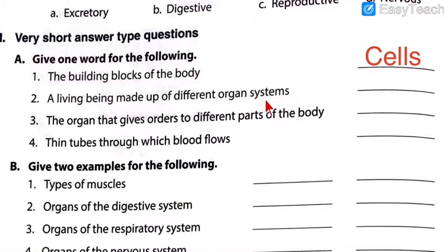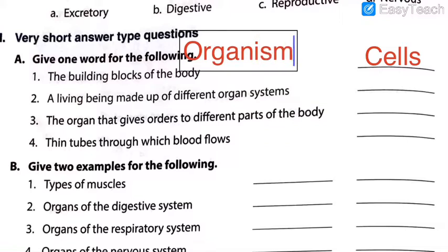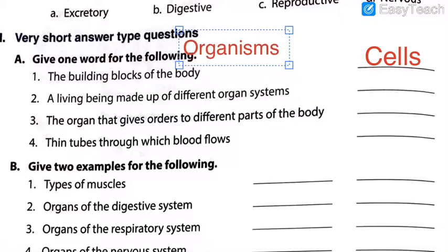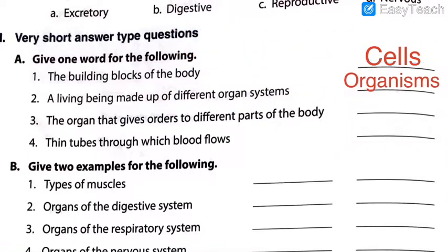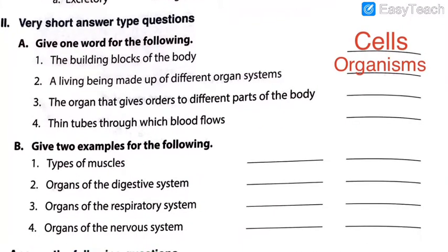If you know that cells make tissues, tissues make organs, and organs make organ systems — then different organ systems together make the organism. So organism is the correct answer. I hope you have written the answers. A living being made up of different organ systems: organisms. You can also write organism in singular form. Please make sure not to make any spelling mistakes — the answers are written on the screen so there should be no chance of spelling errors.